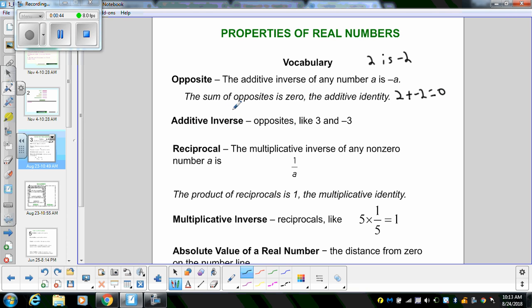The other one is additive inverse. So opposites like 3 and negative 3 added together are zero.